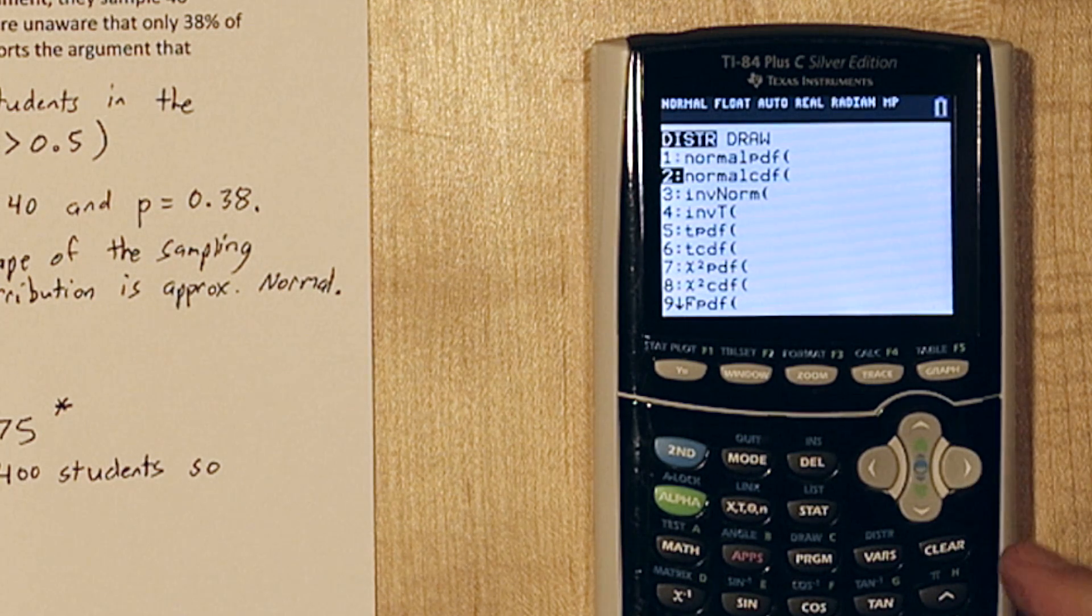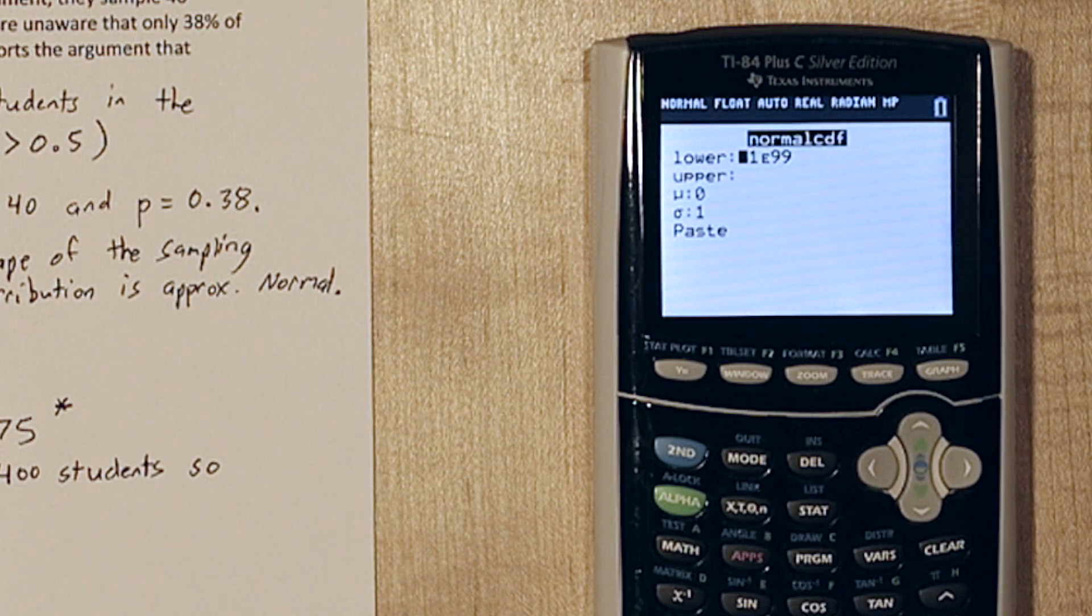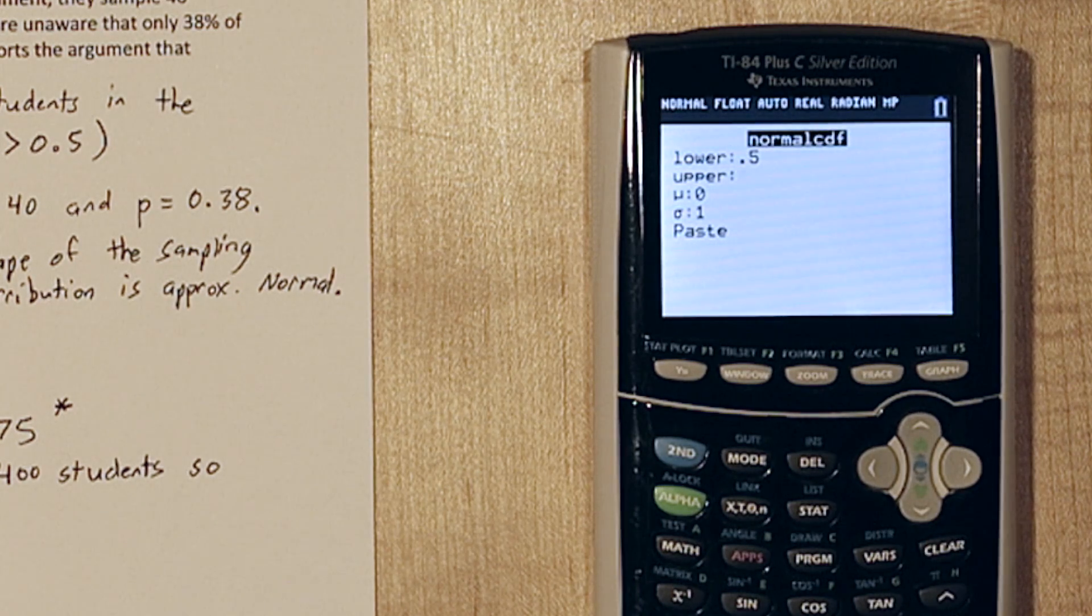Now, using normalcdf, the normal cumulative density function on our calculator, we can calculate the area. Our lower limit is 0.5, our upper limit is positive infinity, so we'll just put a large number here.